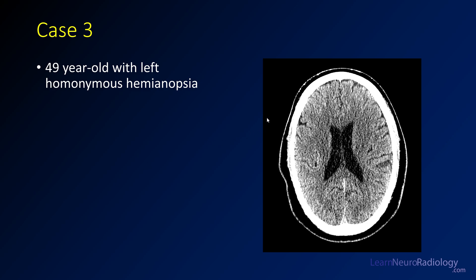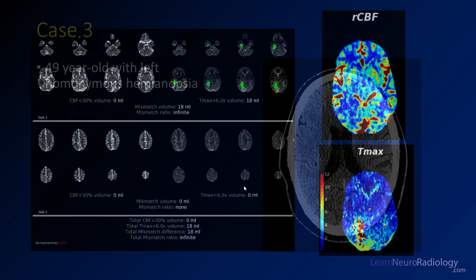Here we have a non-contrast CT. It actually looks pretty normal — I'm not seeing a whole lot here. No real loss of gray-white differentiation. I might question whether there's some hypodensity here, but you get that a lot. You get artifact from the skull, and it's pretty common. I don't see anything that I would really call a territorial infarct here.